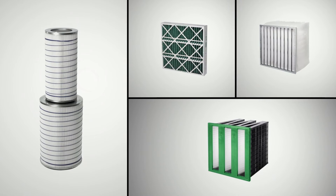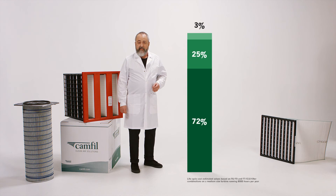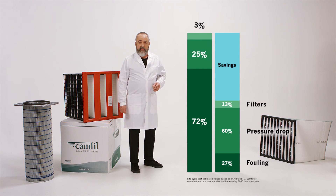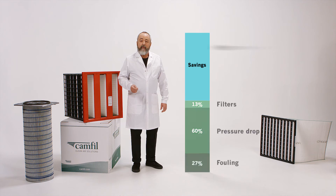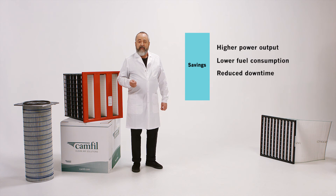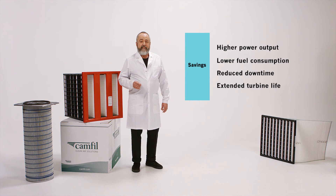High-quality filters may cost a little more initially, but in the long run, filters such as CAM-GT that use the latest technology and the best filter media actually lower your energy bill and your cost by maintaining efficiency longer with the lowest pressure drop. Benefits such as higher power output, lower fuel consumption, reduced downtime, and extended turbine life all combine to decrease your total cost of ownership.